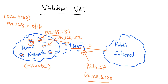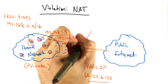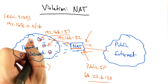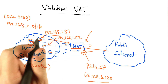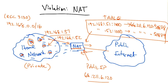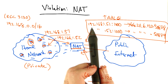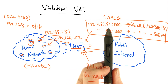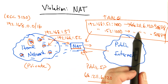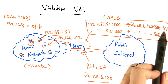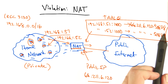When traffic comes back to that public IP address, the network address translator needs to know which device behind the NAT the traffic should be sent to. So it uses a mapping of port numbers to identify which device the return traffic should be sent to in the home network. The NAT maintains a table that says packets with source IP address 192.168.1.51 and source port 1000 should be rewritten to the public IP address and source port 50878.